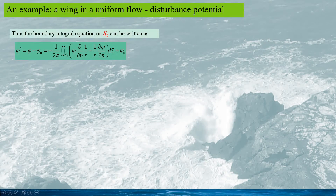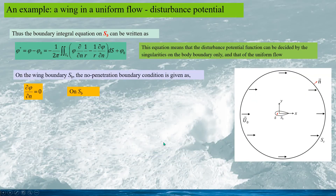Therefore the expression for the uniform flow on SB would be more useful in our application. So we can write the boundary integral equation on SB as this. From the equation, it can be seen the disturbance potential function is decided by the singularities on the body surface and the uniform flow potential phi zero, and this disturbance potential function is independent of the control surface SC.